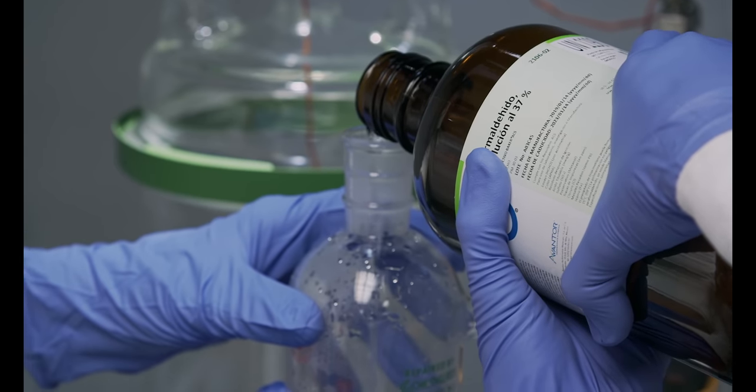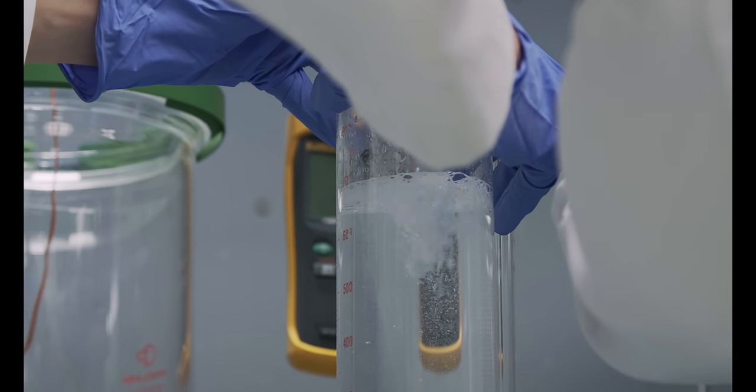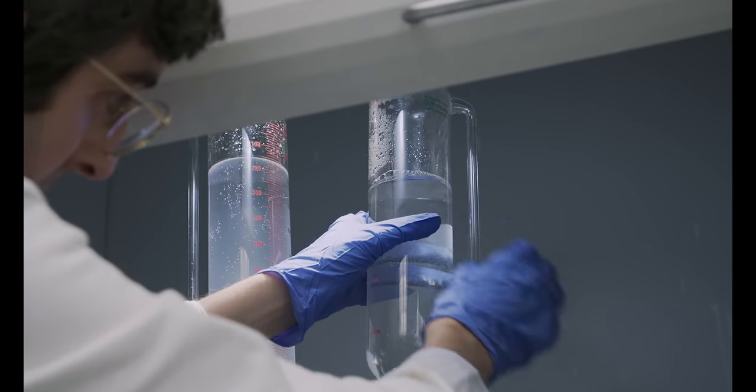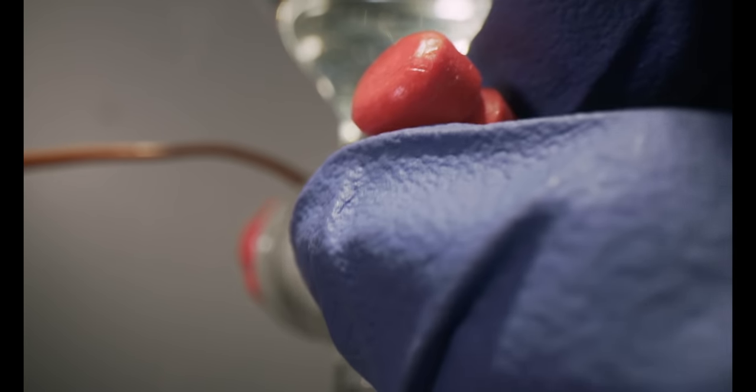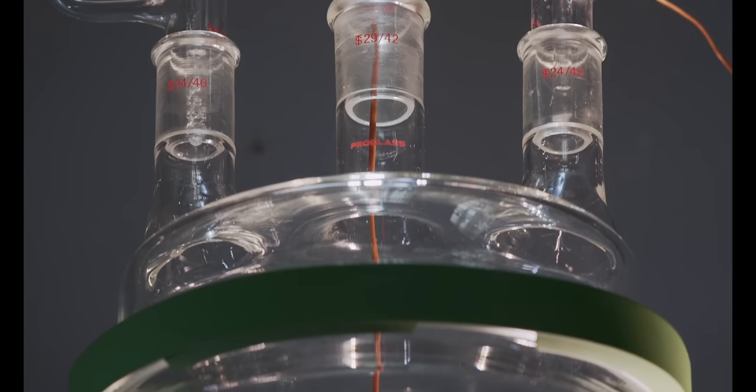A second addition funnel is charged with a methanol-stabilized, aqueous 37% formaldehyde solution, and the dropwise addition begins. And now I'm going to start adding the borohydride.